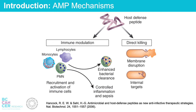AMPs have two main mechanisms of action. In direct killing, the AMP interacts with the cell membrane of the pathogen, either by perforating it and killing the cell, or translocating into the cell and inhibiting internal targets. In immune modulation, AMPs are used as chemoattractants to recruit other immune cells to a site of injury or infection.